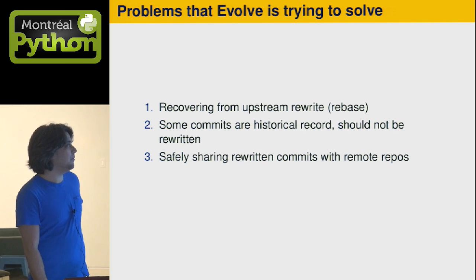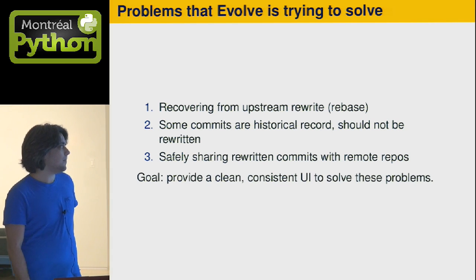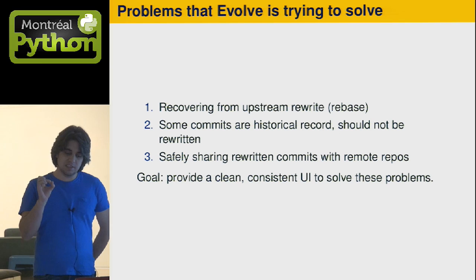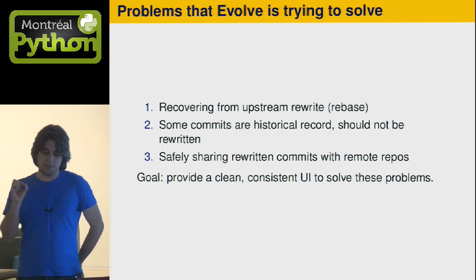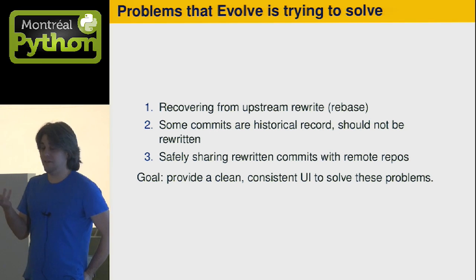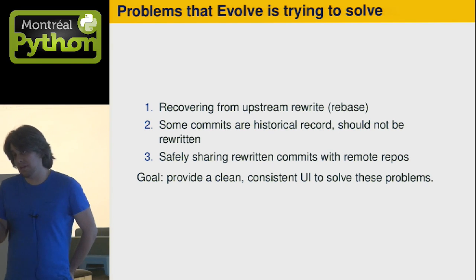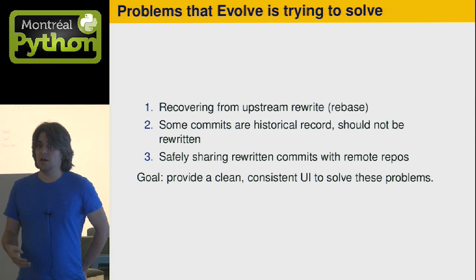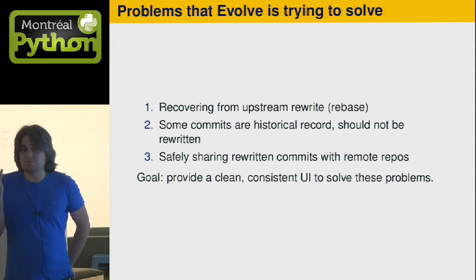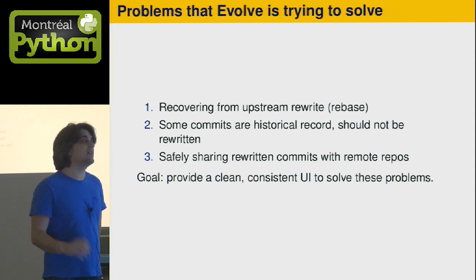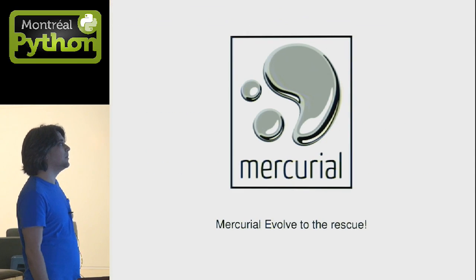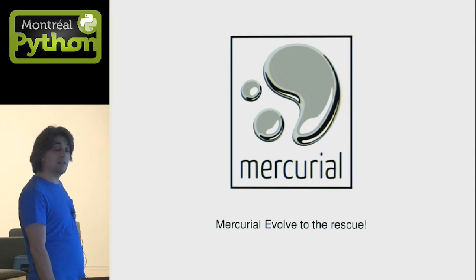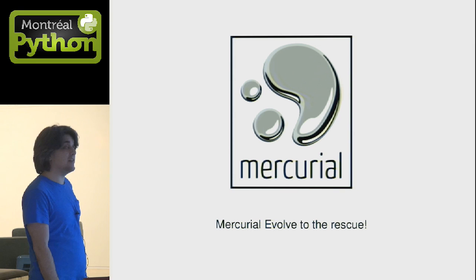The goal is to provide a clean, consistent UI to solve these problems. In Mercurial, we are very proud of providing a clean UI. We want to make things easy for users to do. Evolve is what will allow us to do this.